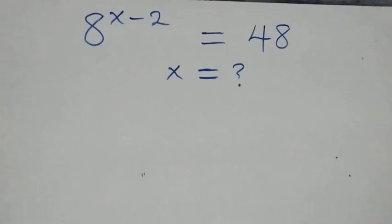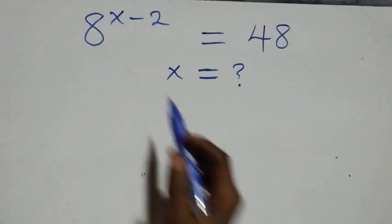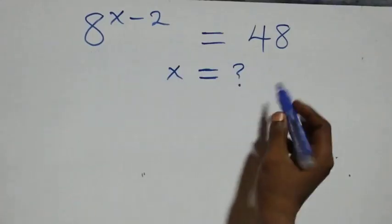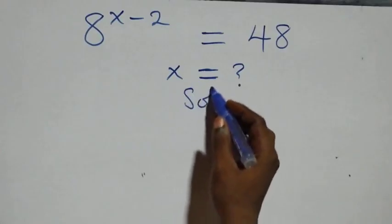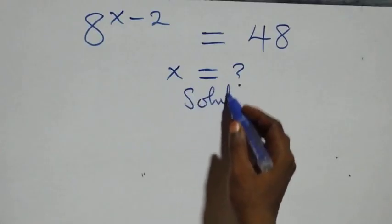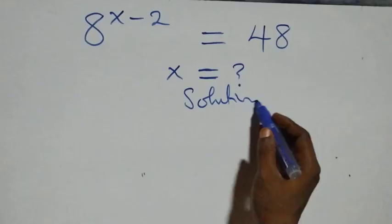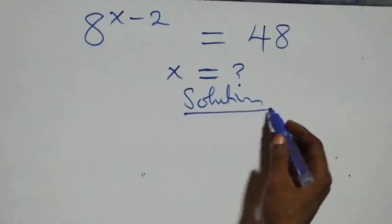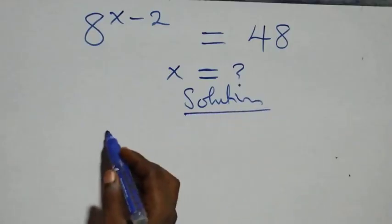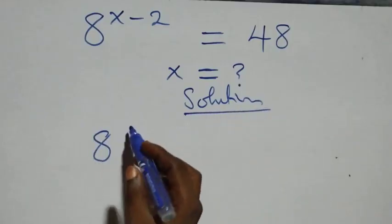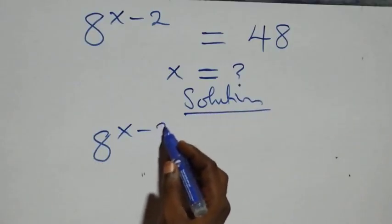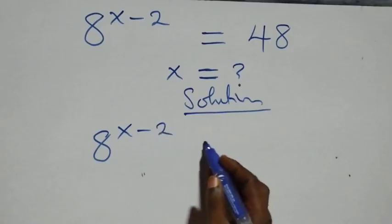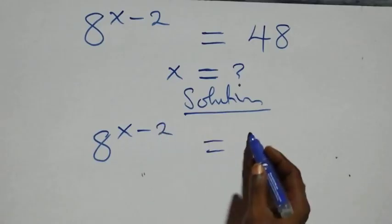Hello, you are welcome. We will solve this nice exponential equation. What we have here is eight raised to power x minus two equals forty-eight.